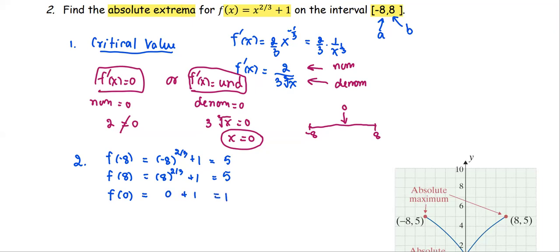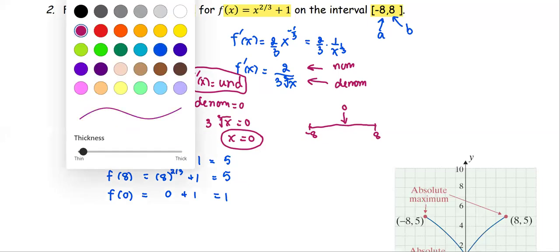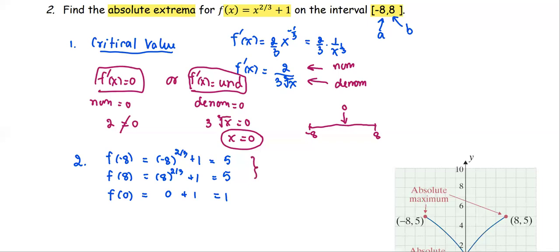After we derive all the function values at the left end, the right end, and the function at the critical point, we identify which one is the largest, which one is the smallest. The largest appears at two different points, negative eight and positive eight.